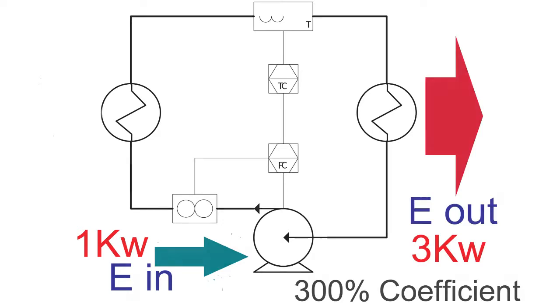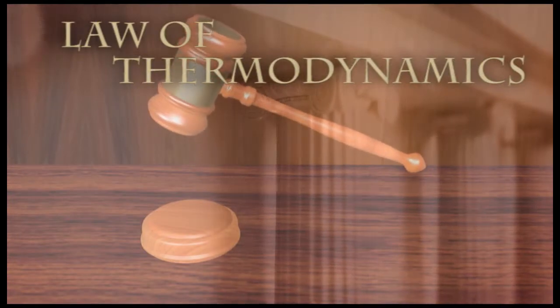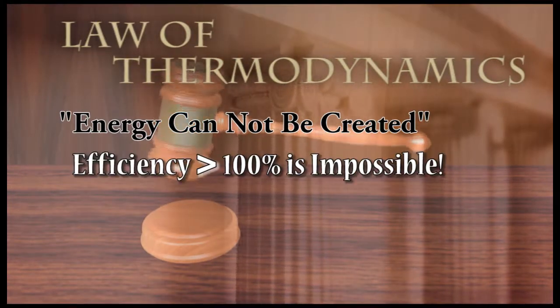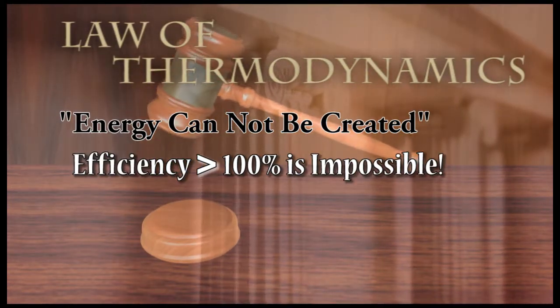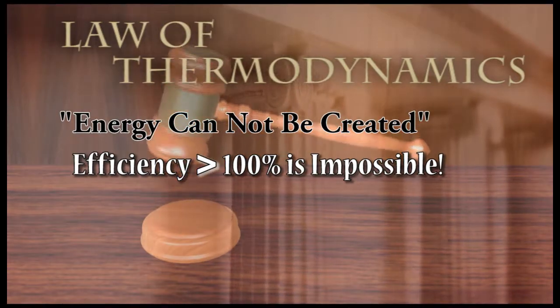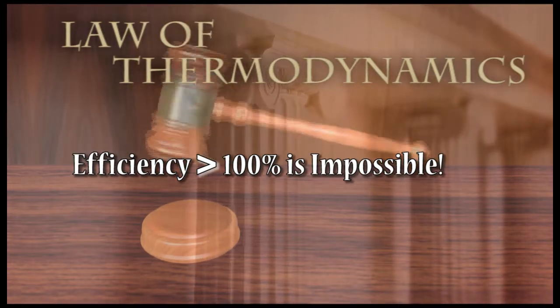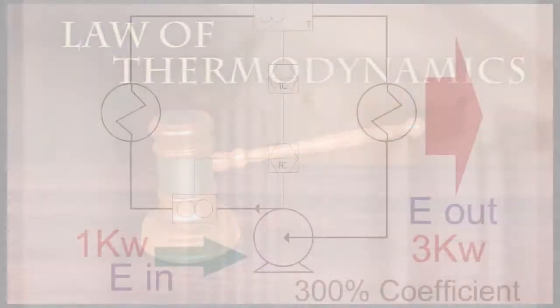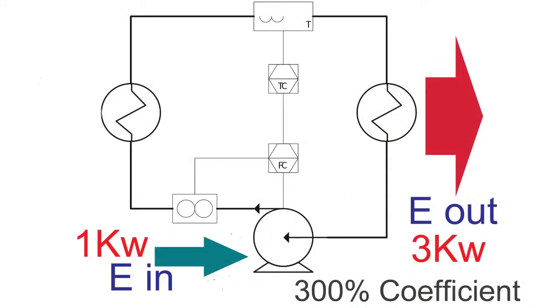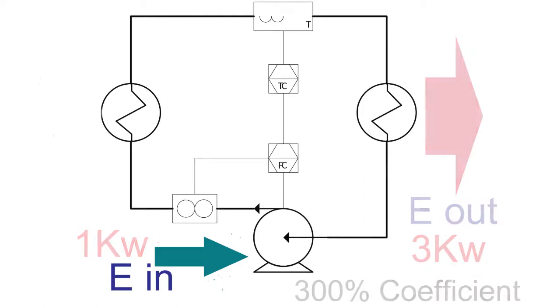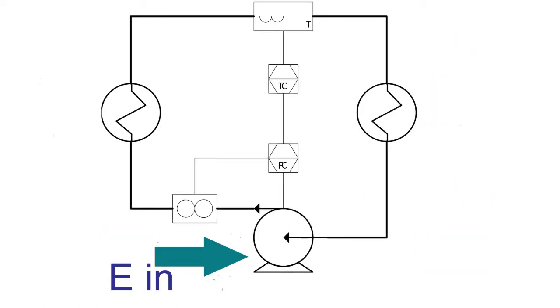One would argue that according to the law of thermodynamics, it's impossible to have an efficiency of more than 100%, as this implies that more energy is being produced than is being put in. The reason that it appears there is more energy being produced is because the only valuable energy input is electricity used to drive the compressor and fans.